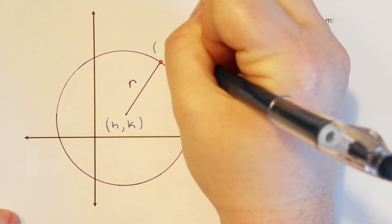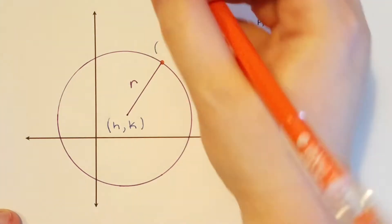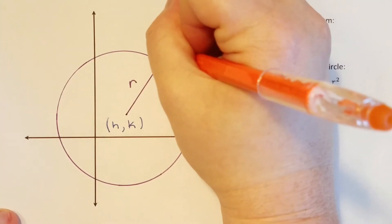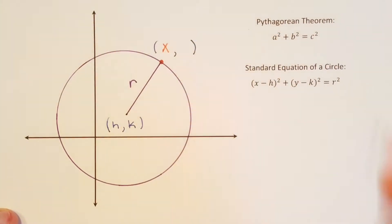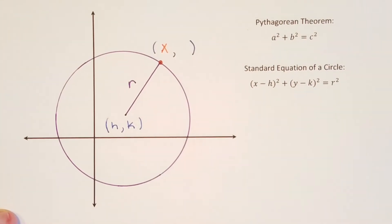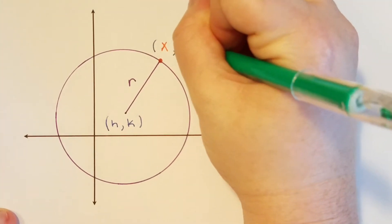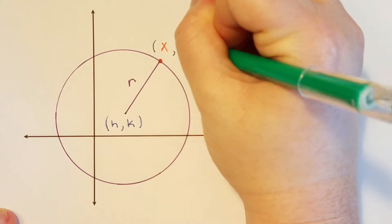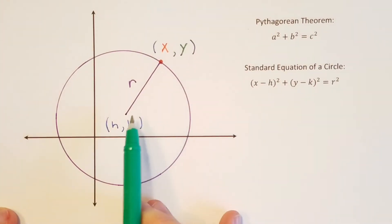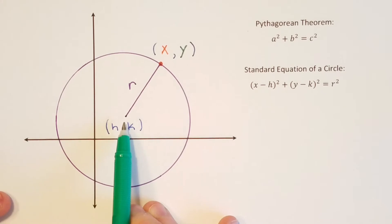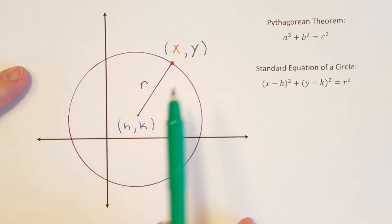So let's think about the definition of a circle. The definition of a circle says that it is a collection or set of all points that are equidistant from a fixed point called the center.